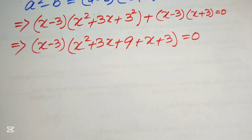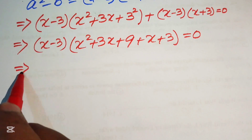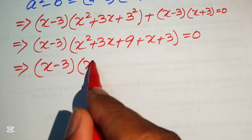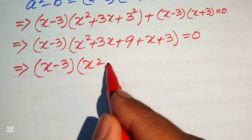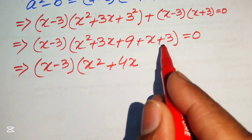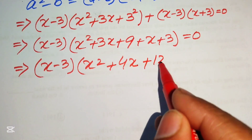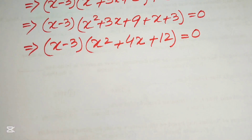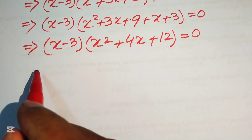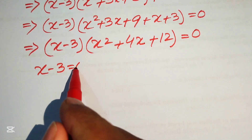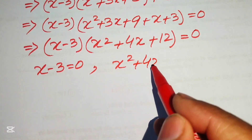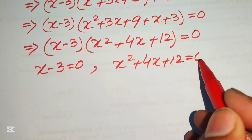After simplification inside the bracket, 3x plus x becomes 4x, and 9 plus 3 becomes 12. So the equation becomes x minus 3 times x squared plus 4x plus 12 equals 0. We now split this into two cases: x minus 3 equals 0, and x squared plus 4x plus 12 equals 0.